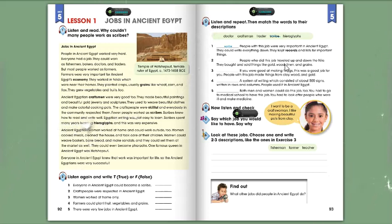Unit 5, Lesson 1, Page 93, Exercise 3. Listen and repeat, then match the words to their descriptions. Doctor, Craftsman, Trader, Scribe, Hieroglyphs.